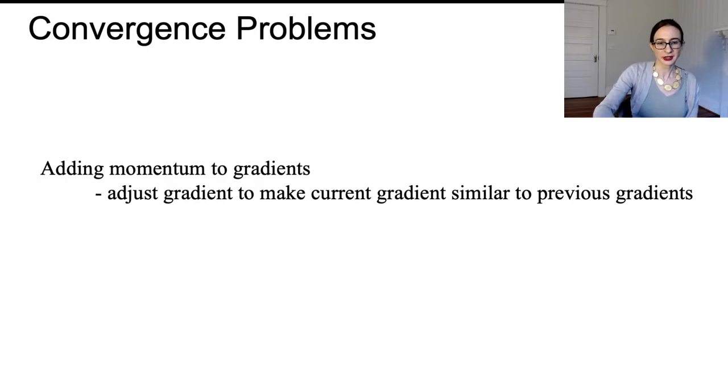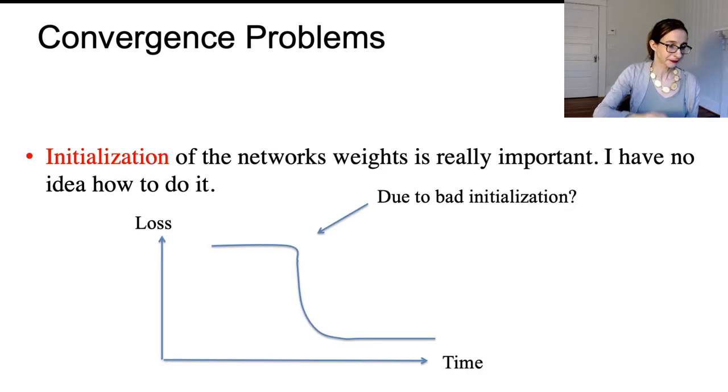Another way to help with convergence problems is to change the initialization. As you know, neural networks have a non-convex decision surface, so if you land in the wrong local minimum that can be problematic. But if you can initialize properly, you can land in the right local minimum and slide right down to the bottom.